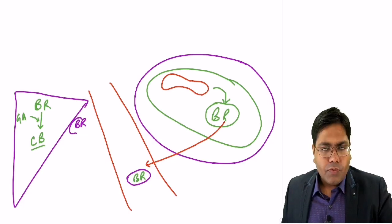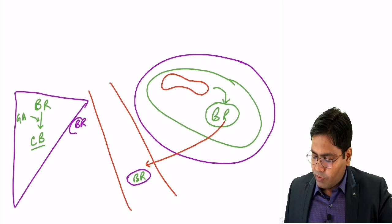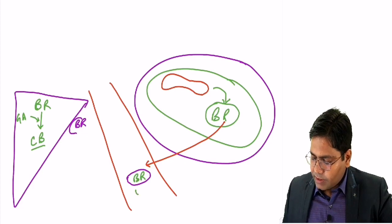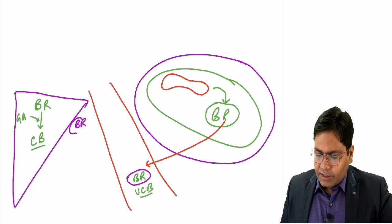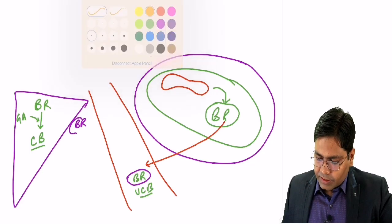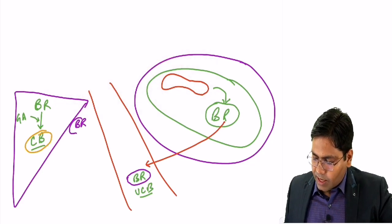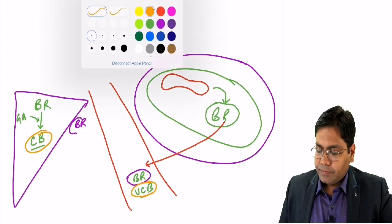When the bilirubin is not conjugated, that form is known as unconjugated bilirubin. So we have two types of bilirubin: conjugated bilirubin and unconjugated bilirubin.